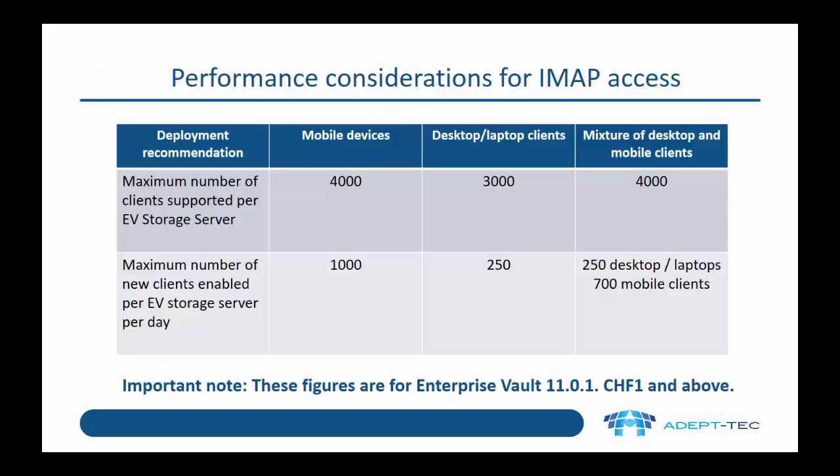There are a number of performance considerations for IMAP access. The maximum number of clients supported per EV storage server is up to 4,000 mobile devices per EV server. It's not recommended to add too many new clients per day — the recommended maximum is 1,000 mobile devices per day. Importantly, these figures are for Enterprise Vault 11.0.1 cumulative hotfix one and above. Veritas introduced a number of performance improvements in that cumulative hotfix, so if you're going to implement IMAP, you're strongly recommended to use at least that cumulative hotfix or above.